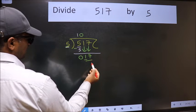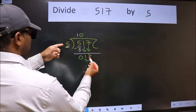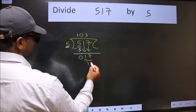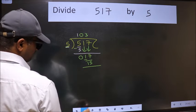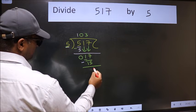Now 17. A number close to 17 in 5 table is 5 threes 15. Now we should subtract. We get 2.